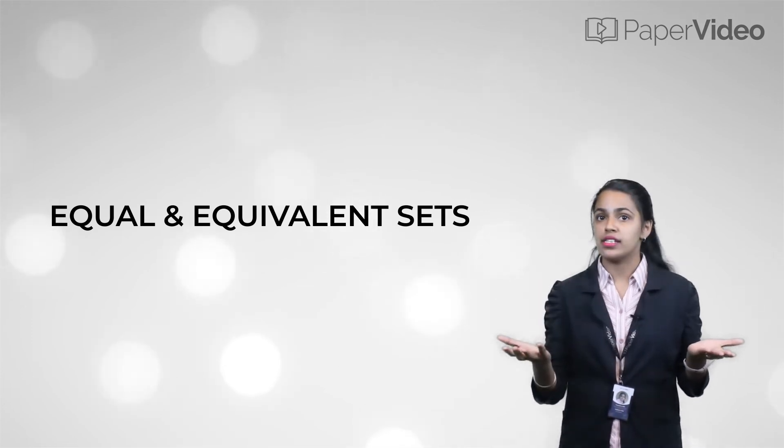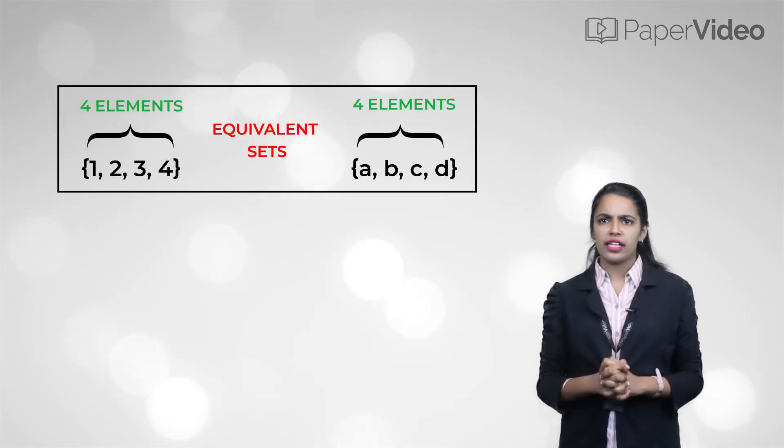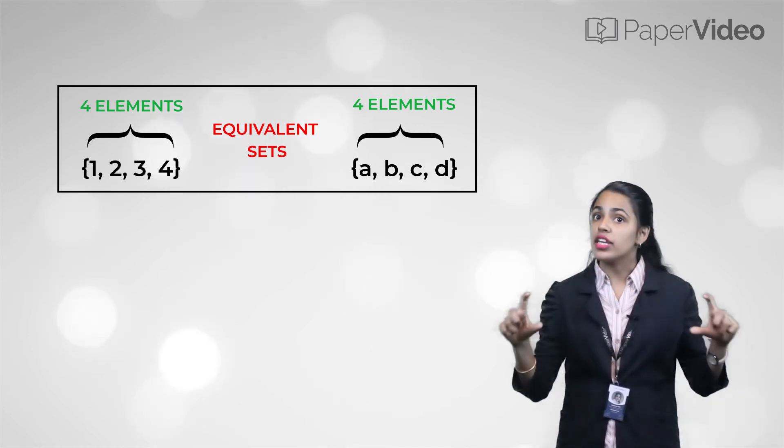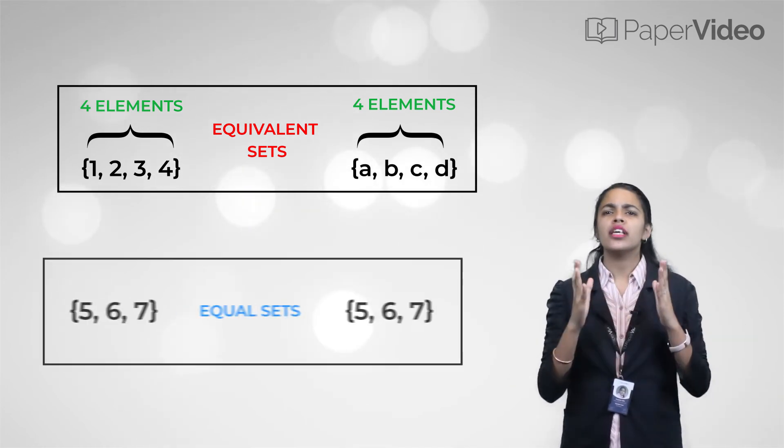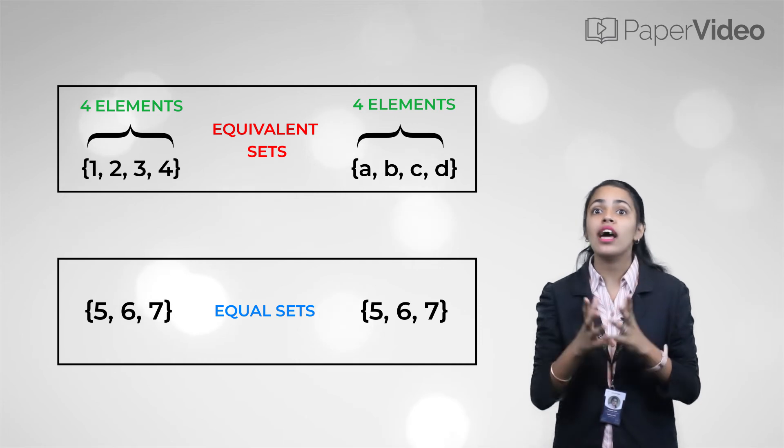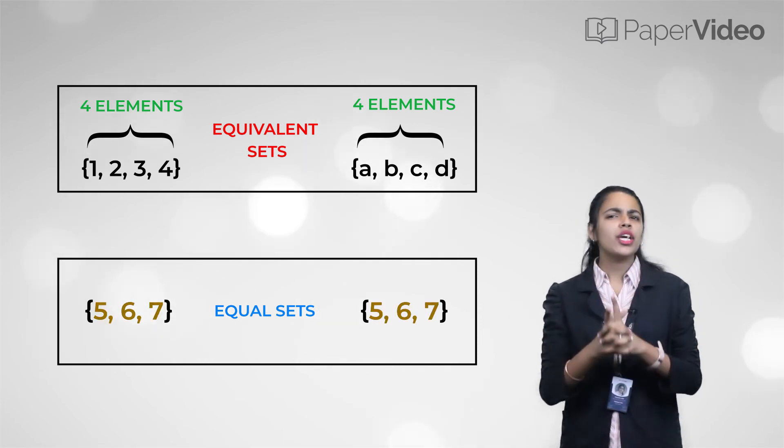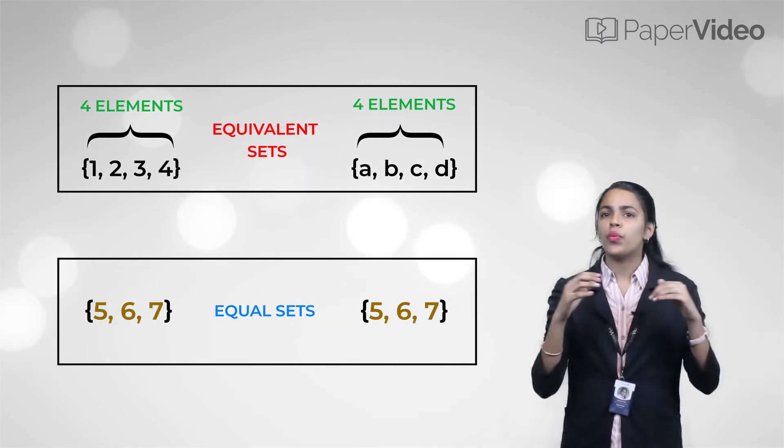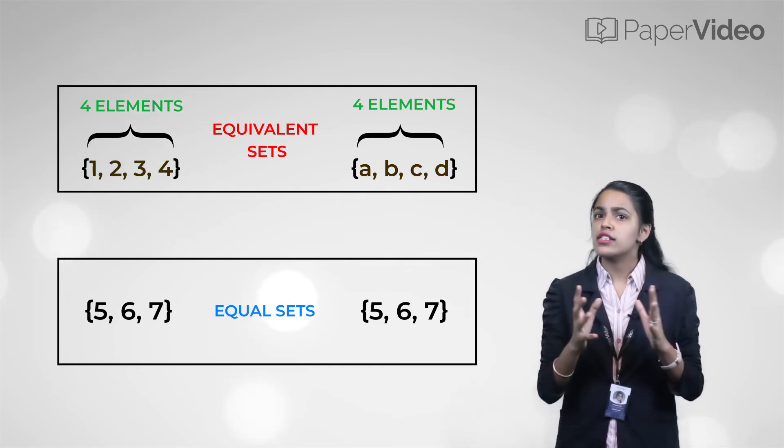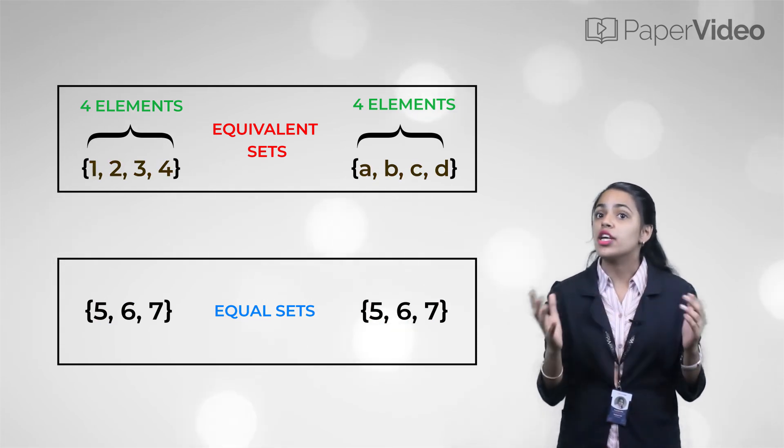There is a difference between equal sets and equivalent sets. In equivalent sets, the number of elements are equal. Whereas, in equal sets the elements are identical. Equal sets are always equivalent. Whereas, the equivalent sets are not necessarily equal.